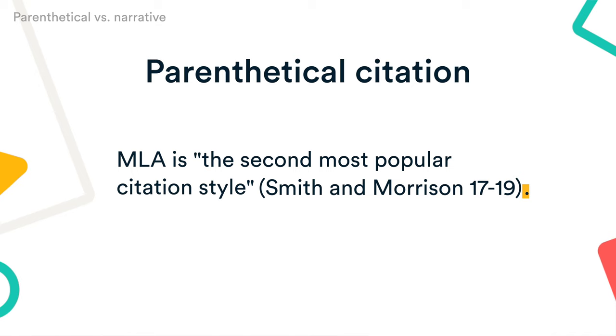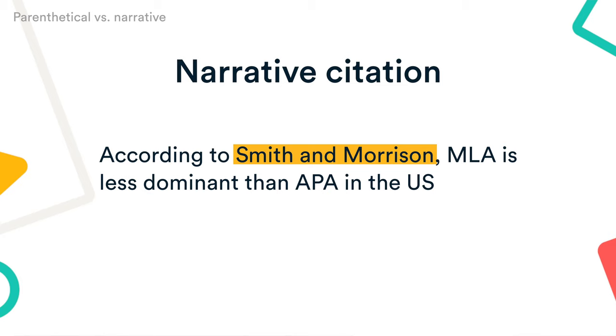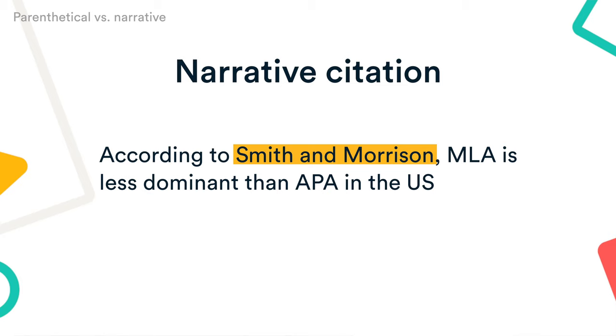You can integrate your in-text citation in a sentence using a parenthetical or narrative citation. Place the parenthetical citation directly after the relevant quote or paraphrase, and before the period or other punctuation mark. If you've already named the author in a sentence, add only the page number in parentheses. This is called a narrative citation.